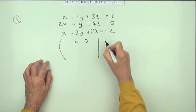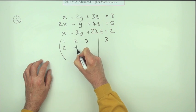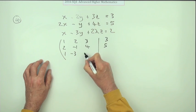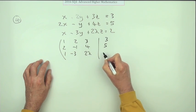That's 1, 2, 3, 3. 2, negative 1, 4, 5. 1, negative 3, but that is 2 lambda, 2.